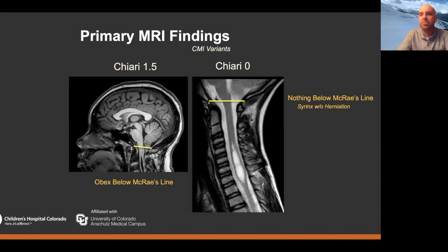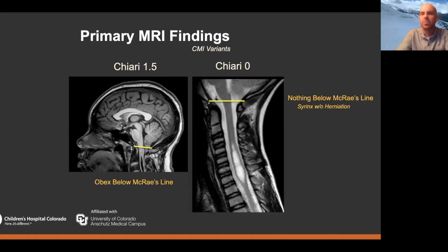Chiari 0 in my experience has been a little bit of a yeti — I don't think I've ever seen a patient with one. The concept behind it is that you actually have Chiari-like physiology in a patient who doesn't have herniation of their tonsils. So you can have potentially symptomatic syringomyelia without actual tonsillar herniation, and that can be treated by doing a posterior fossa decompression and opening up potential arachnoid adhesions causing that physiology.